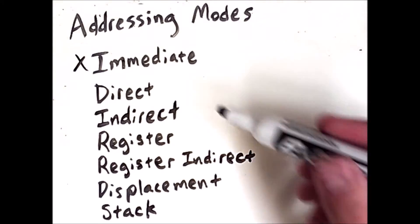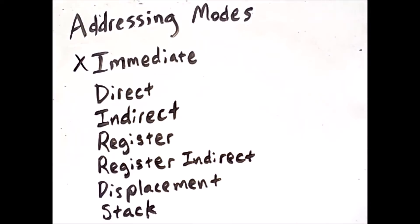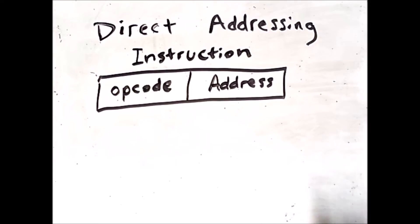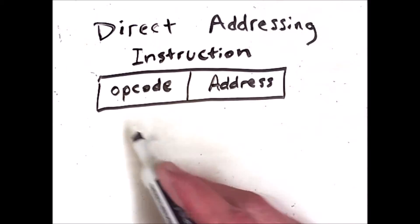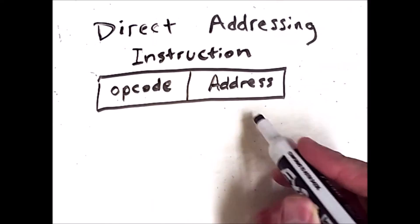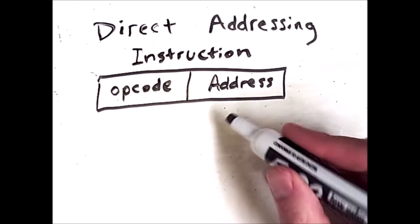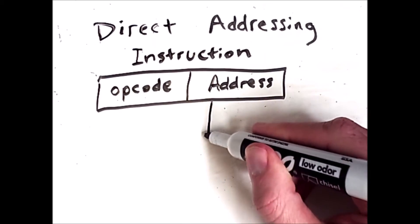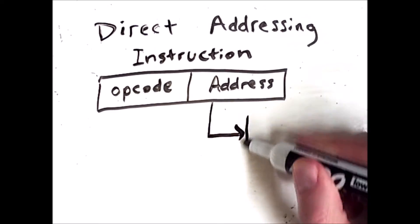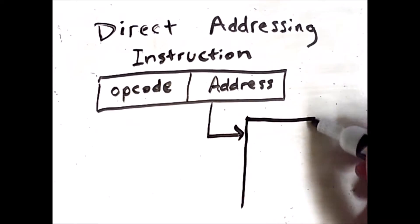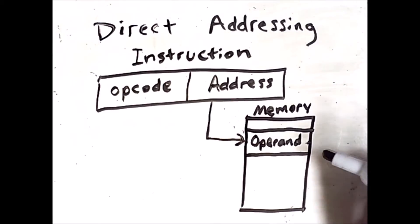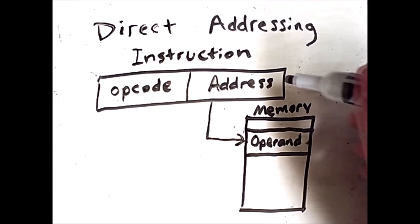The next addressing mode is direct addressing, which is where the bits in the machine instruction contain a memory address. An instruction using direct addressing has an opcode followed by a memory address. This looks similar to immediate addressing, but in this case the address refers to a particular location somewhere in memory, so the operand we want is in memory at an address specified within the instruction itself.